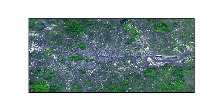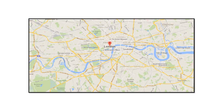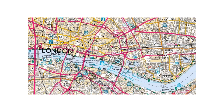Take London for example. Here we see a satellite view of the city. Here is another view showing the city and road layouts. Here yet another, showing an Ordnance Survey map of London.